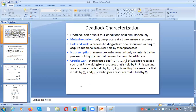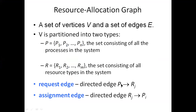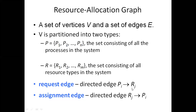These are the necessary conditions for the deadlock. We also need to understand request edges and assignment edges. A request edge means the process is requesting a resource — the arrow goes from process to resource. An assignment edge means the resource is allocated to a process — the arrow goes from resource to process.